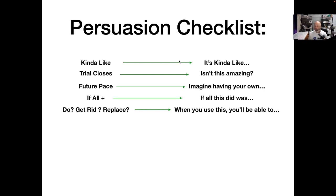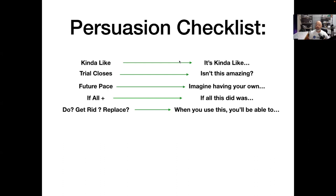Do/get rid of/replace: what are the things they have that they can get rid of? Before HighLevel you had MailChimp, Zapier, Calendly — all these different things you Frankenstein together, paying different subscriptions for all of that. What can this thing help you get rid of? And what can it replace? That is using logic throughout your stories and your pitch to get people to buy.